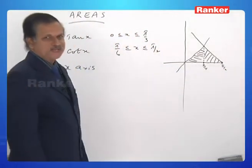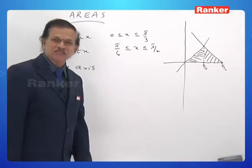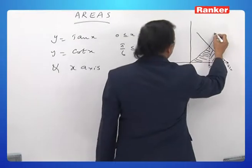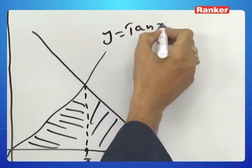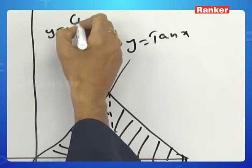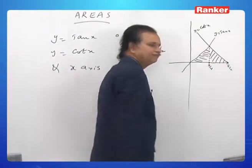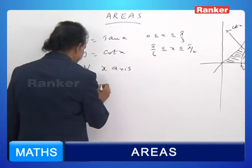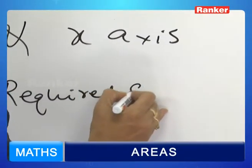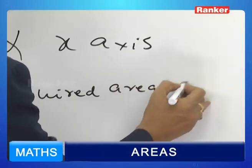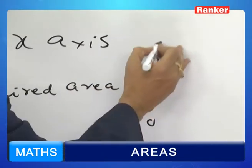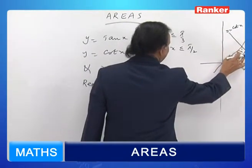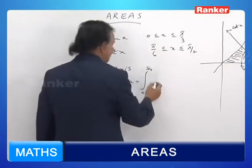So it has been split into two pieces. For the first piece, what is this graph? y equals tan x. And for this it is y equals cot x. So required area equals integral 0 to pi by 4. From this to this, we are moving under the curve y equals tan x.